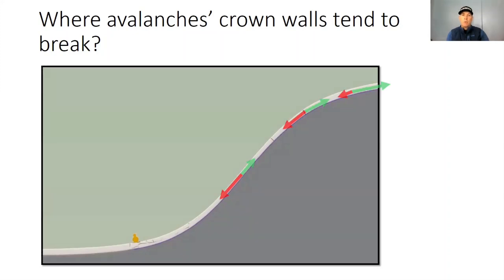In this image, the green arrows are proportional to the friction, and the red arrows are proportional to the gravitational force. As we can see, the friction decreases and the downslope pull increases with slope angle.